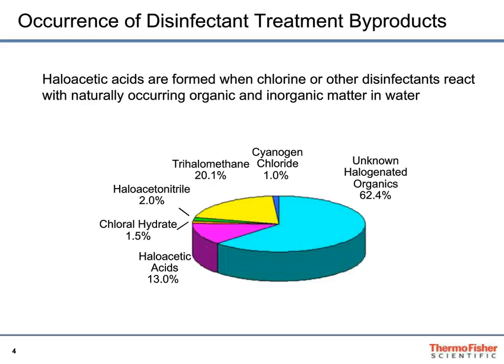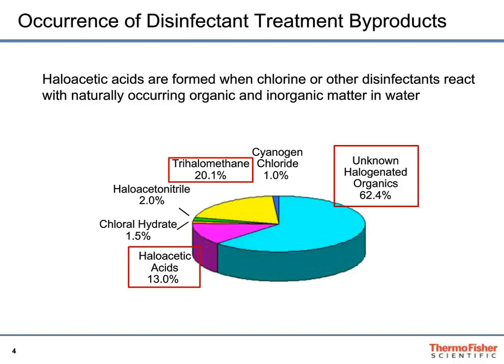Let's look a little bit more at the disinfection treatment byproducts. Haloacetic acids are formed from chlorine reacting with naturally occurring organic and inorganic matter in the water. The two contaminants of interest right now are the haloacetic acids and trihalomethanes — these are relatively emerging contaminants. Also note that there's more than two-thirds of the contaminants that are unknown, and it is believed largely from the regulatory community that these may be more toxic than the haloacetic acids and the trihalomethanes.